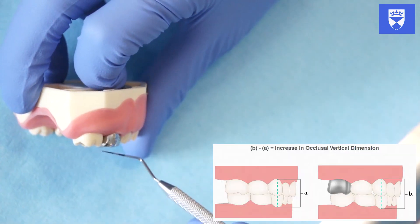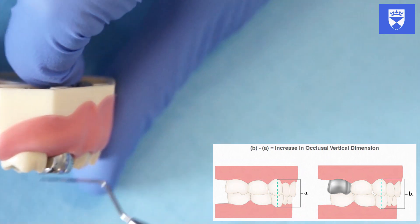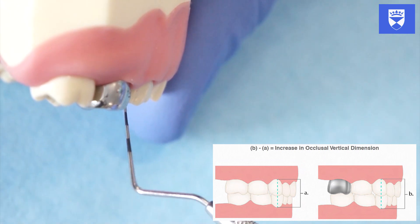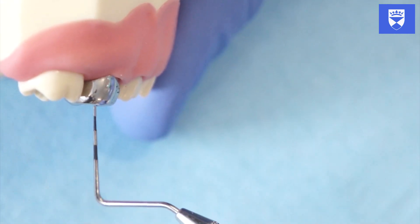Advise the patient that the crown will feel high in the bite but that this will resolve in approximately 2 weeks. The crown is likely to be the only point of contact and will have increased the occlusal vertical dimension by approximately 2mm.